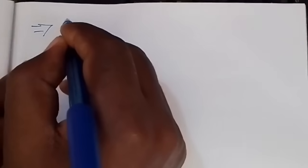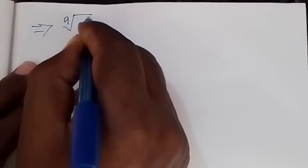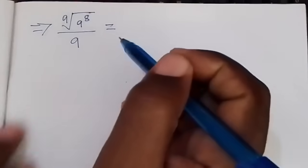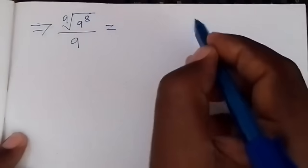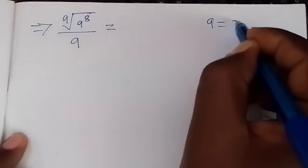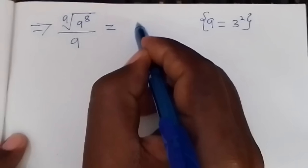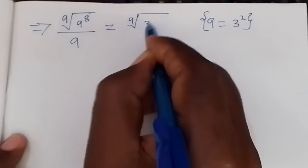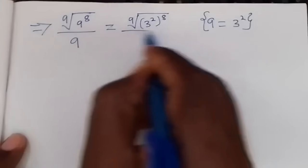Next, we have the 9th root of 9 to the power 8 over 9. Now let us apply the rule that 9 is the same as 3 squared. So here we have the 9th root of 3 squared, the whole of this raised to power 8, over 9.